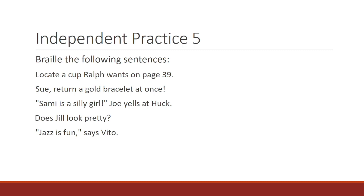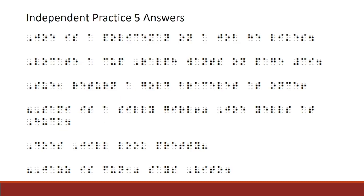Here is independent practice 5. Braille the following sentences. Locate a cup Ralph wants on page 39, period. 39 is written as the numerals 3, 9. Next sentence: Sue, comma, return a gold bracelet at once, exclamation mark. Next sentence: open quote. Sammy is a silly girl, exclamation mark, closed quote. Joe yells at Huck. Next sentence: Does Jill look pretty, question mark. Last sentence: open quote. Jazz is fun, comma, closed quote, says Veto, period. Here are the answers to independent practice 5, written in braille font.